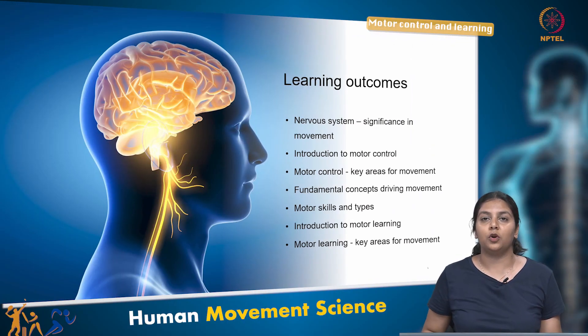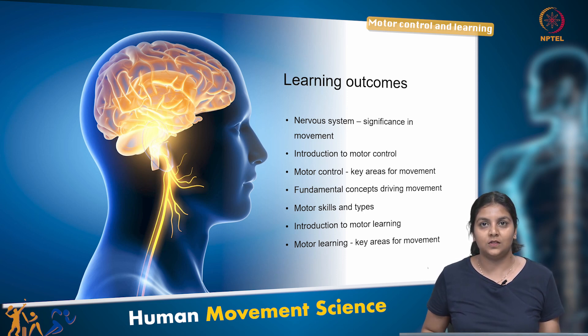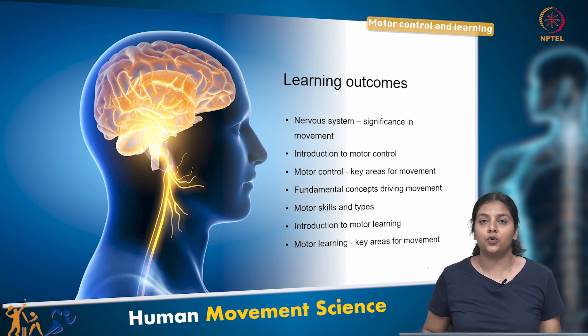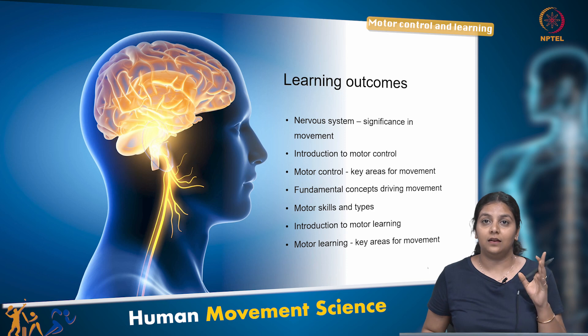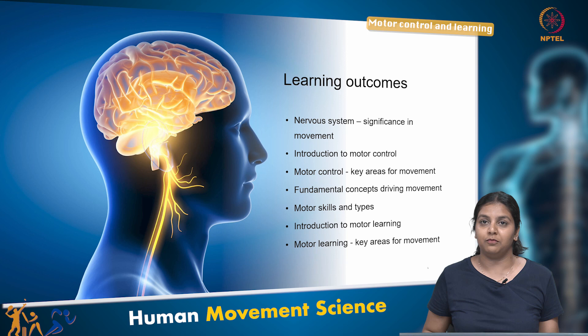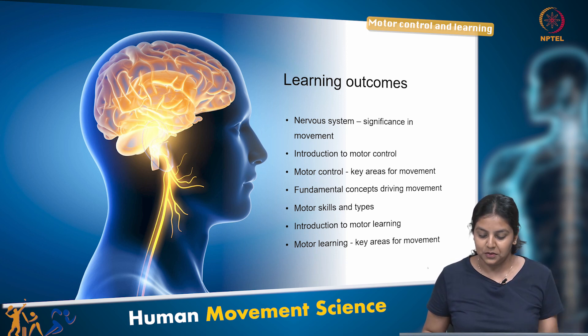Hello and welcome to module 3, Functional Anatomy. Today we are going to be looking at motor control and learning. The learning outcomes for these modules include a brief recap of the nervous system and its significance in movement, an introduction to motor control and motor learning, the key brain areas that allow for movement control and learning, the fundamental concepts that drive movement, and the key areas responsible for motor learning.